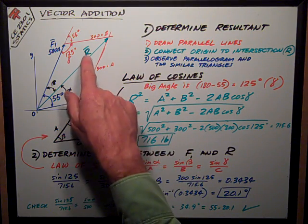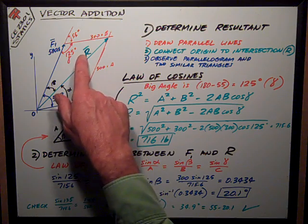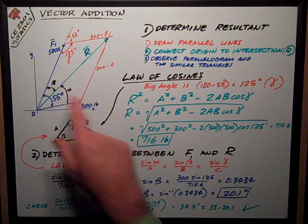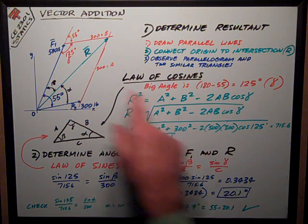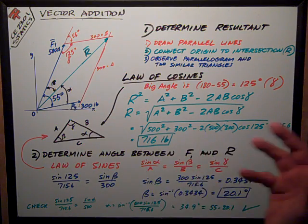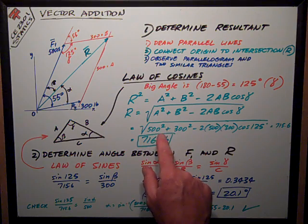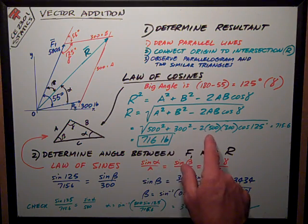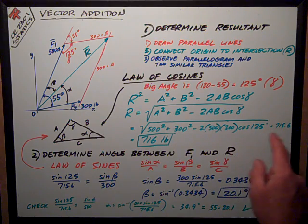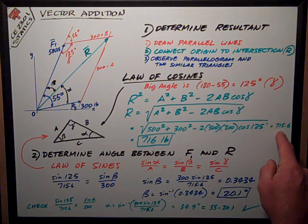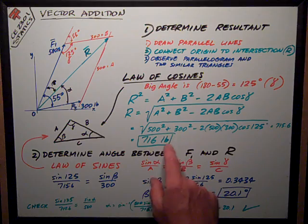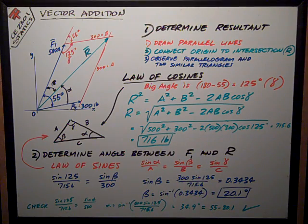In this case, R is what I'm trying to solve for. A and B are these lengths 300 and 500. This angle gamma is 125 degrees. I have everything I need to solve it. Plug into the equation: 500 squared plus 300 squared minus two times 500 times 300 times the cosine of 125 equals 716.14. Take the square root and get 715.6. I would report my answer as 716 pounds, three significant digits.